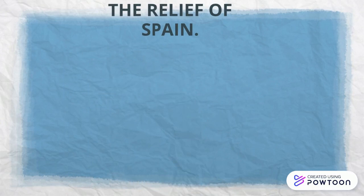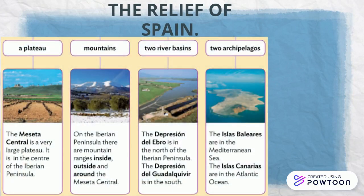What features can we see in Spain? We can see a plateau called the Meseta Central. We can see mountains inside, outside, and around the Meseta Central. There are two river basins: the Ebro and the Guadalquivir. And finally, two archipelagos: the Baleares and the Canarias.